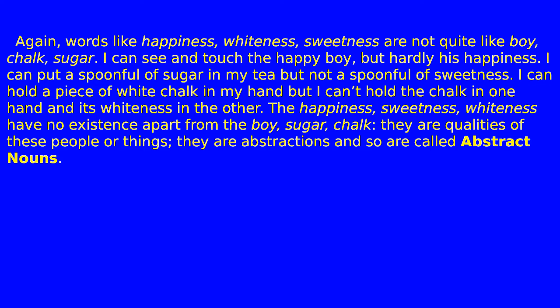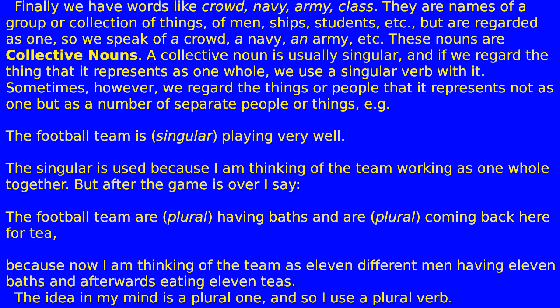I can hold a piece of white chalk in my hand, but I can't hold the chalk in one hand and its whiteness in the other. Happiness, sweetness, whiteness have no existence apart from the boy, sugar, chalk. They are qualities of these people or things — they are abstractions, and so are called abstract nouns.